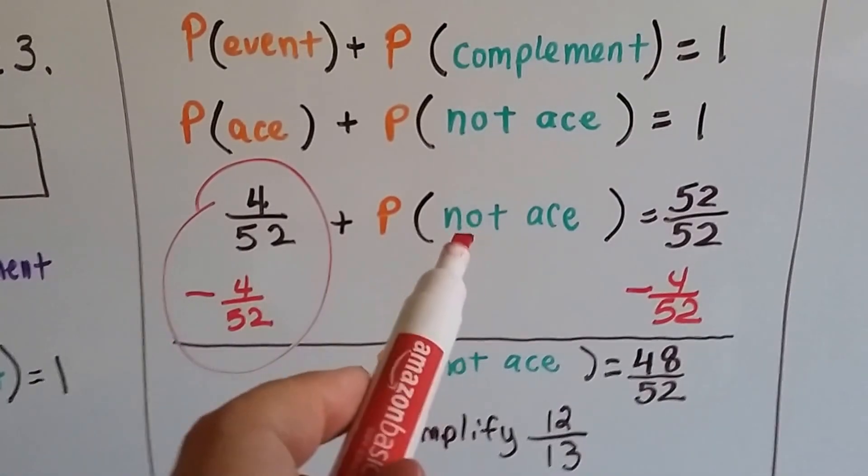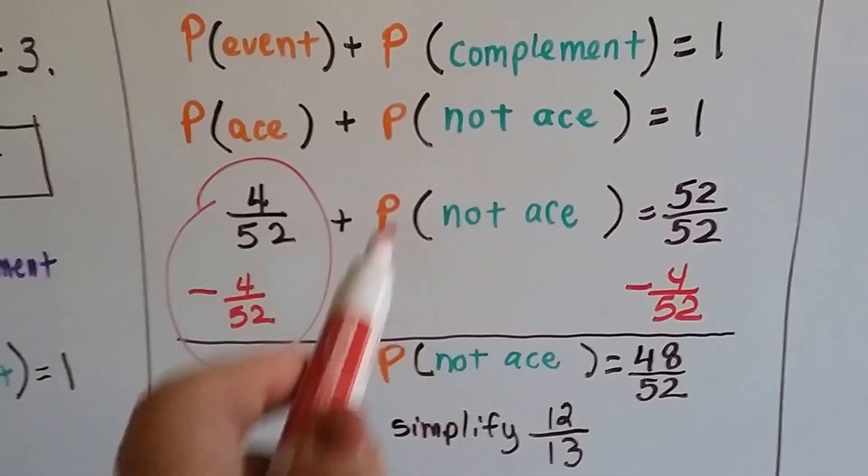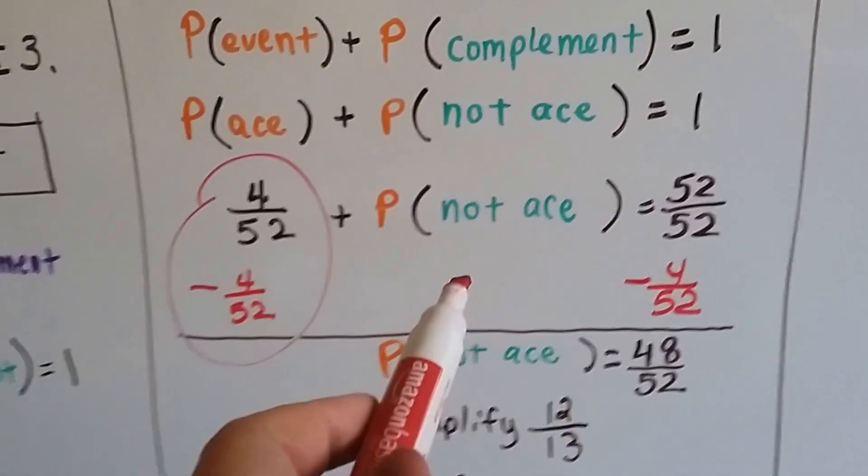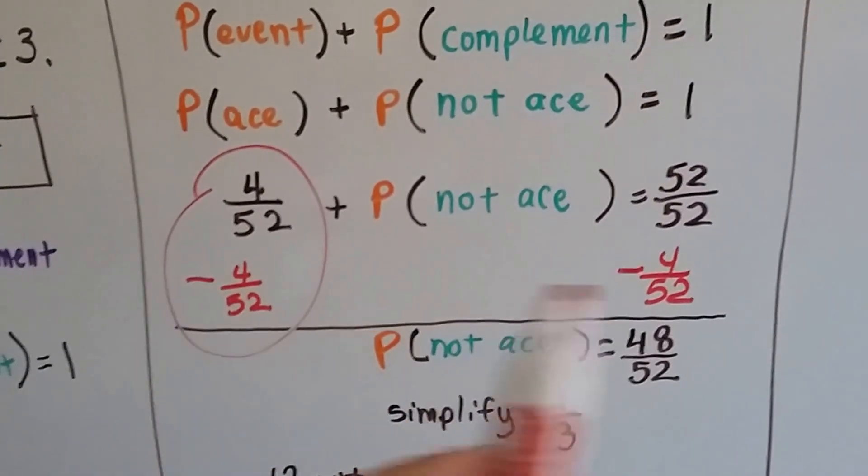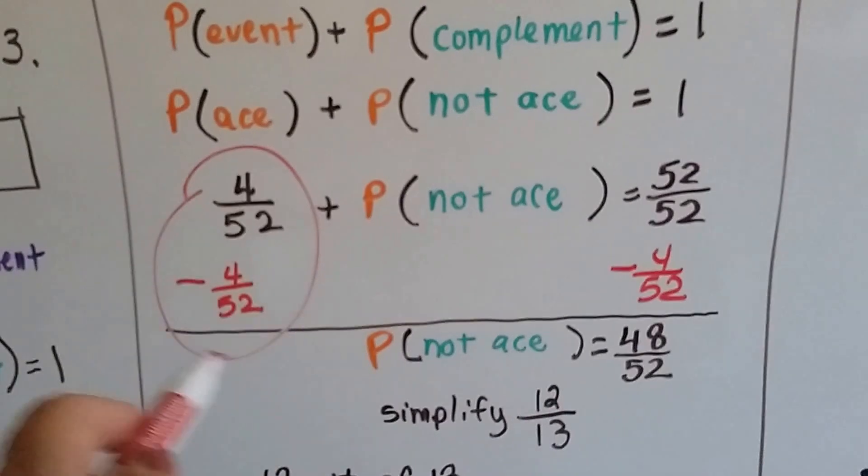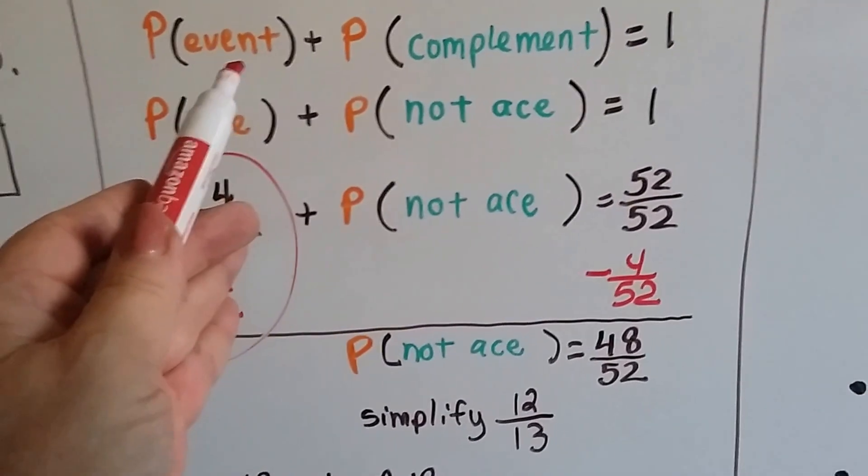To isolate the probability of not getting an ace, just as if it were a variable in an algebra problem, we subtract 4 over 52 from each side. That creates a zero pair, eliminating the first term.